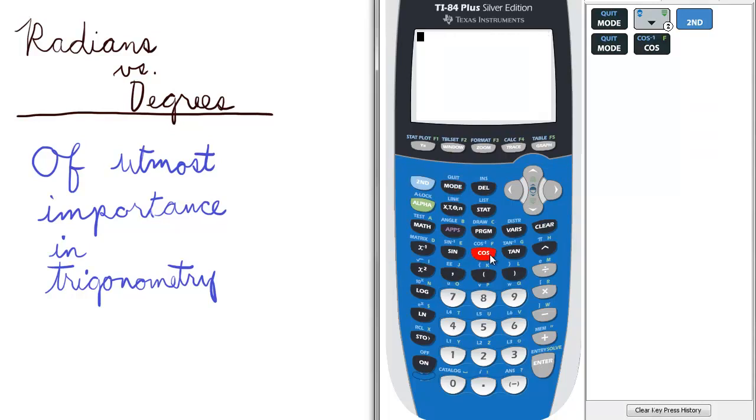So if we take the cosine of pi, so cosine, second, caret symbol to select pi, and enter, we get the value of negative 1.